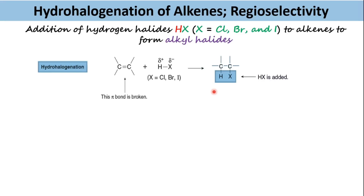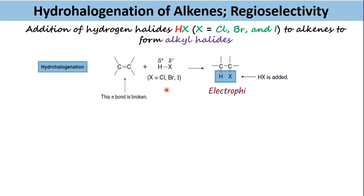Because X is more electronegative than hydrogen, the HX bond is polarized, with a partial positive charge on hydrogen and a partial negative charge on halogen. The electrophilic end of HX is attracted towards the electron-rich double bond. These reactions are called electrophilic additions.